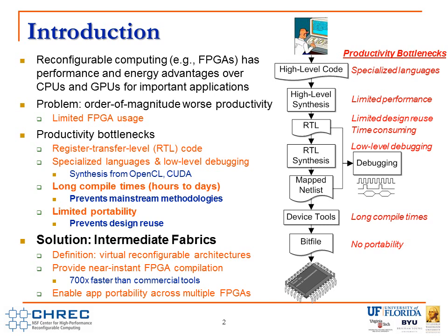To potentially solve these problems, we've introduced a technology called intermediate fabrics, which are basically virtual reconfigurable architectures implemented on top of a physical FPGA. The term 'intermediate' refers to the fact that the fabric is an intermediate layer lying between the application itself and the underlying FPGA. As I'll show later, intermediate fabrics enable near-instant FPGA compilation that is currently about 700 times faster than commercial tools. They also enable application portability across potentially any FPGA, which is important because it encourages more widespread design reuse.